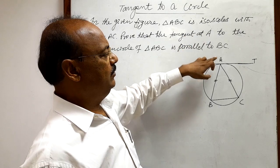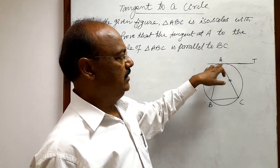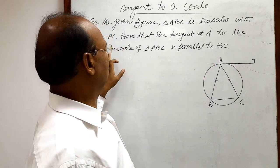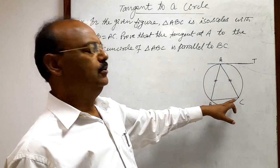Here tangent at A means AT. So this tangent AT is drawn at the point of contact A. And here we have to prove that this tangent AT is parallel to BC.